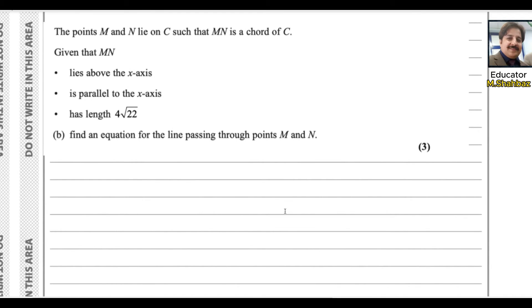Let us read the statement. The points M and N lie on C such that MN is a chord of C. Given that MN lies above the x-axis and is parallel to the x-axis, and length of MN is 4√22.